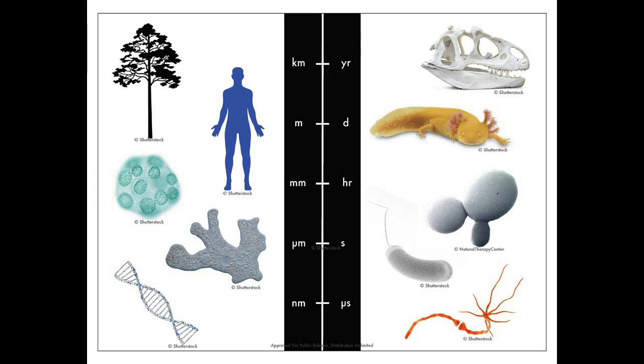When I talk about the complexity of biology, I'm referring to the way in which it spans many scales of space and time, all the way from molecules up to ecosystems, and all the way from cells talking to each other to evolution. These different scales interact with one another in ways that are interdependent and can even give rise to emergent or collective behavior. This is what makes biology so difficult to control and engineer with.